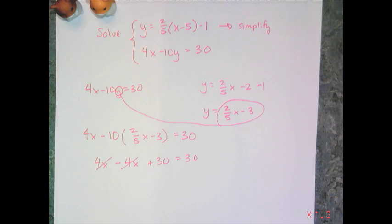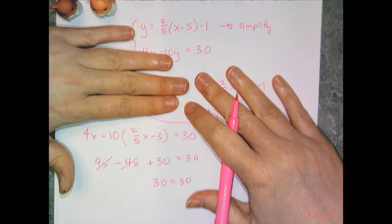And so those two are gone, and I'm left with something peculiar. I'm left with 30 equals 30. And remember when we solved equations that were just like this without the system? If I had something like that, that meant I had all reals as my solution set.